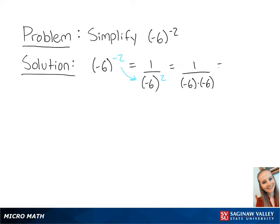Negative 6 times negative 6 is equal to 1 over 36. This is going to be your final answer.